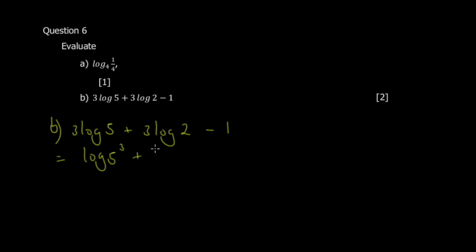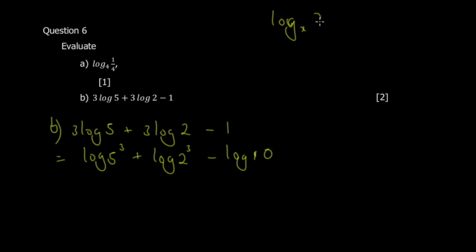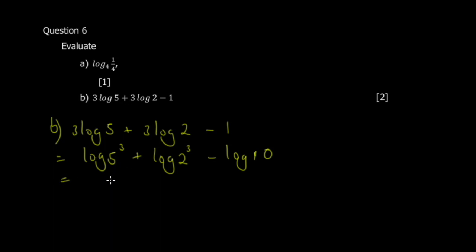The coefficients become powers according to the laws of logarithms. Note that there is no base written, which means the base is 10. For base 10, to get 1 you need log base 10 of 10, since log base x of x always equals 1. So the minus 1 becomes minus log 10.